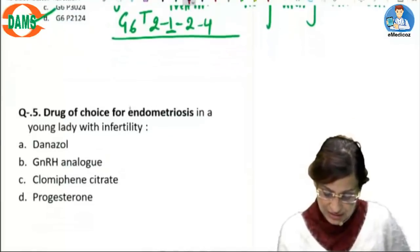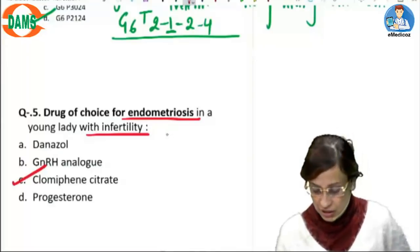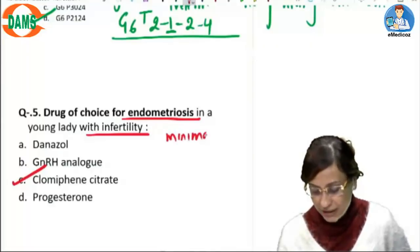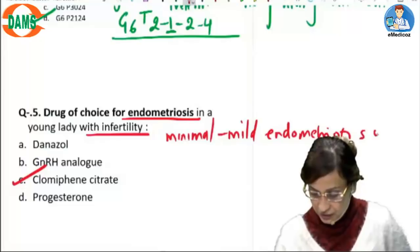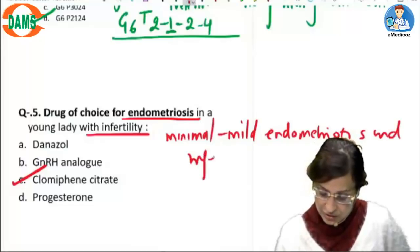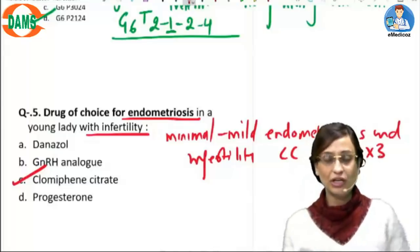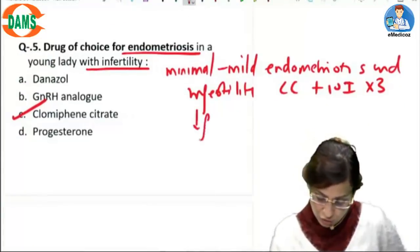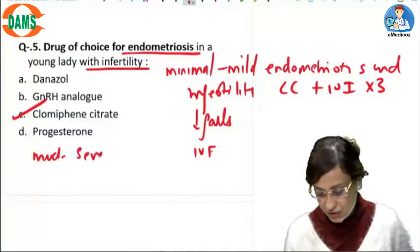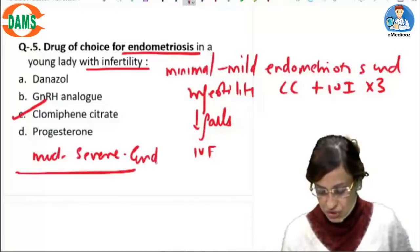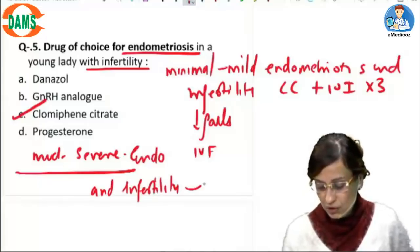Then the next question says, drug of choice for endometriosis in a young lady with infertility is Clomiphene citrate. So if it is minimal to mild endometriosis and infertility, then we give her CC plus IUI for three cycles. If this is successful, good. If it fails, then she is going to go for IVF. Whereas if it is moderate to severe endometriosis and infertility, then straight away she will go for IVF.